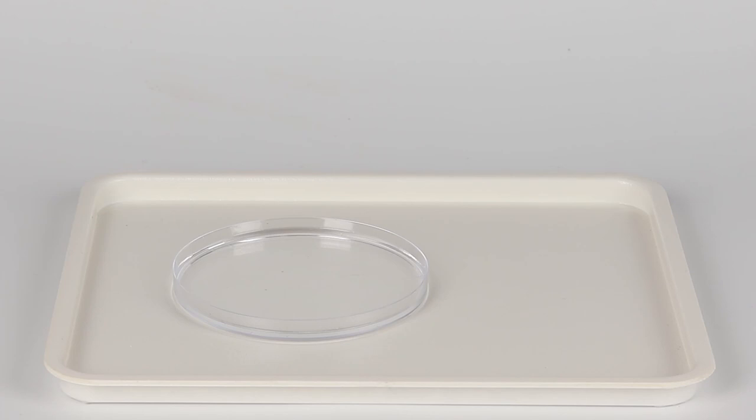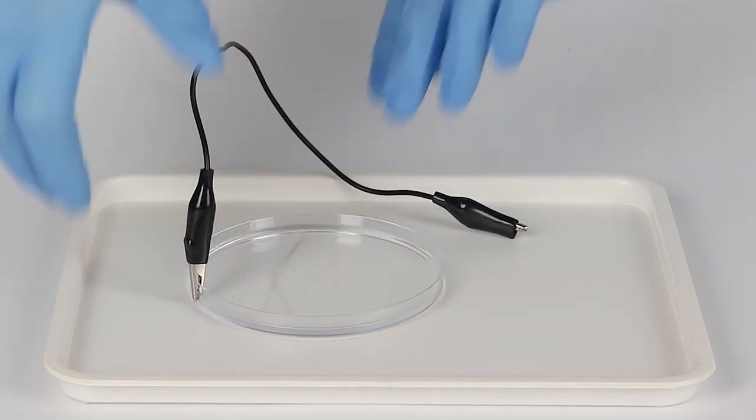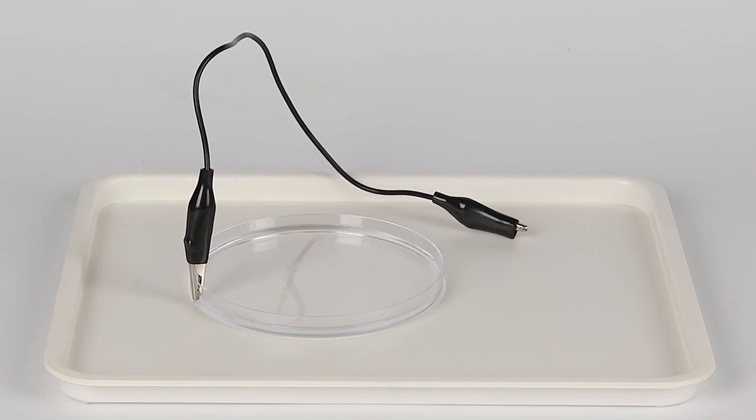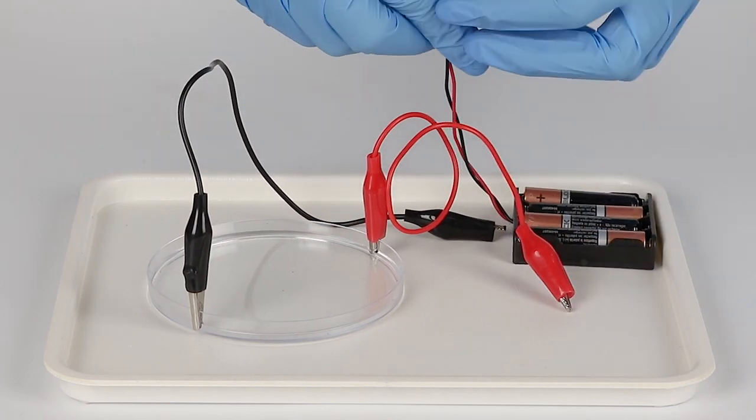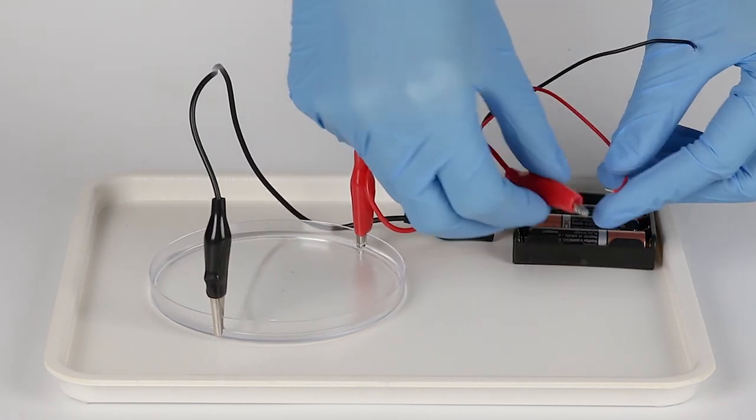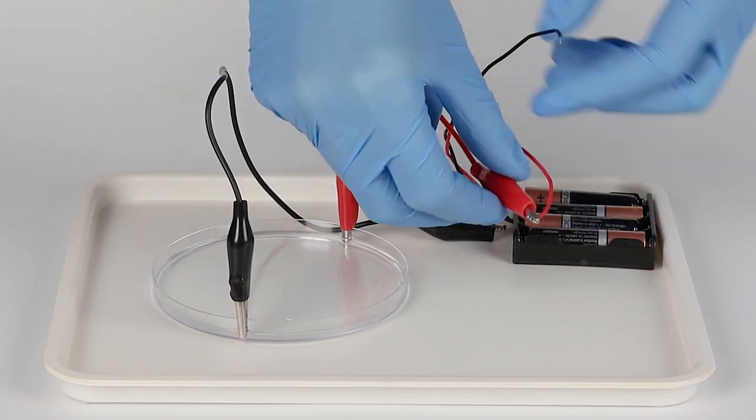Now attach the crocodile clip wires to opposing sides of the petri dish, so that the clips are touching the solution. Take the battery holder with the batteries and connect the red crocodile clip to the red wire of the holder. Do the same with the black wires.